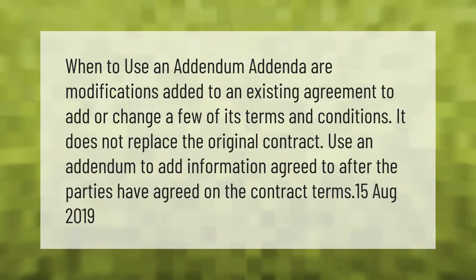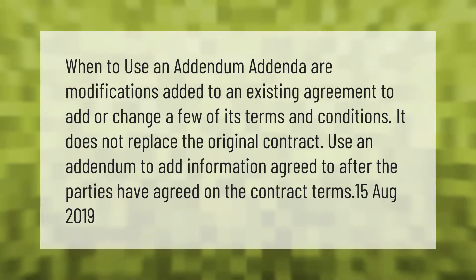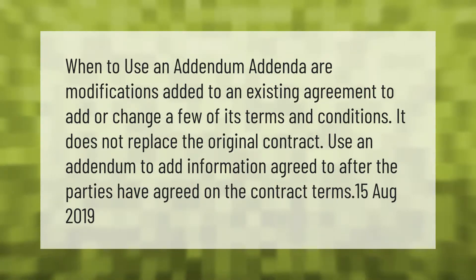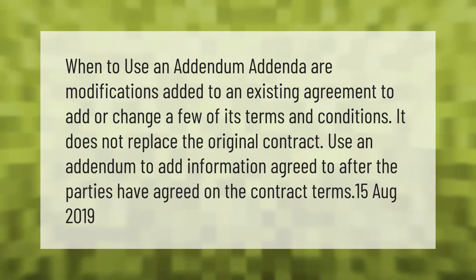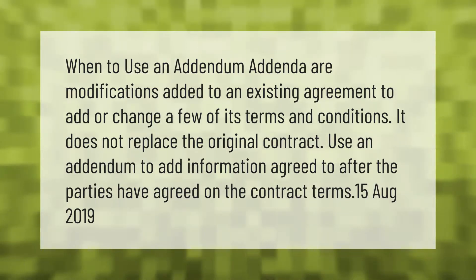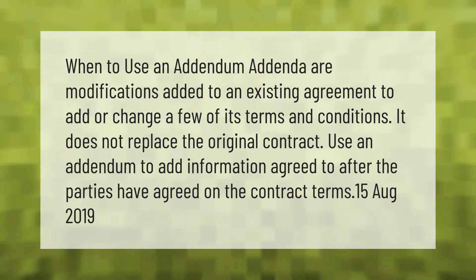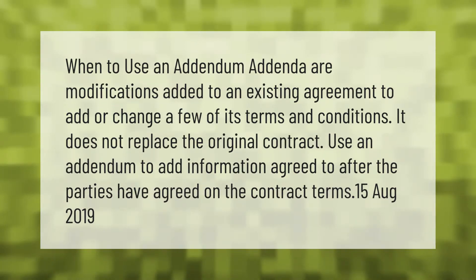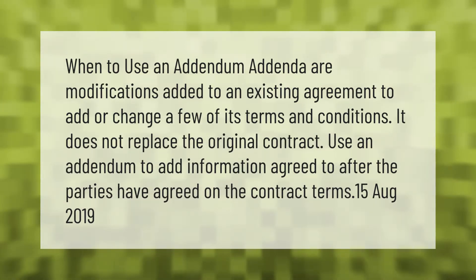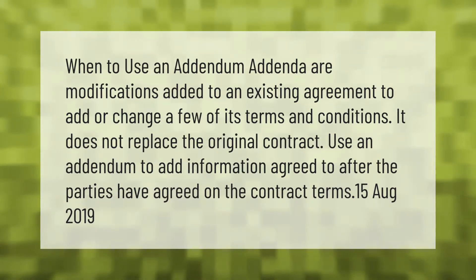When to use an addendum: addenda are modifications added to an existing agreement to add or change a few of its terms and conditions. It does not replace the original contract. Use an addendum to add information agreed to after the parties have agreed on the contract terms.